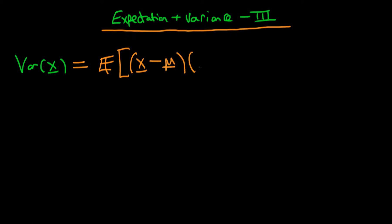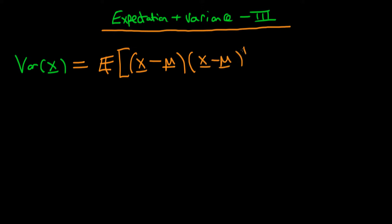You might think it's just that whole thing squared, but remember that this actually has dimensions — m by 1 — and you can't multiply an m by 1 by another m by 1 vector; that doesn't make any sense. You can't just do element-wise multiplications. So we define the variance of x as being equal to the expectation of (x minus mu) times (x minus mu) transpose.